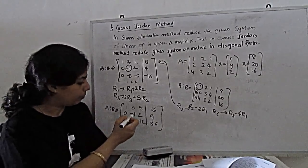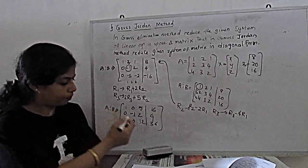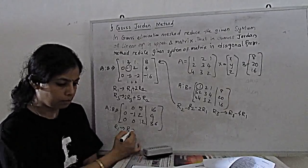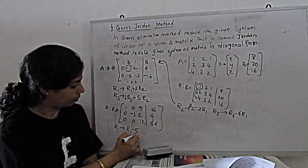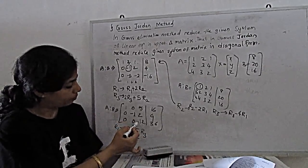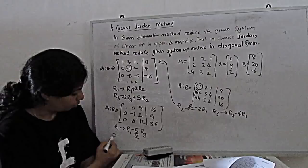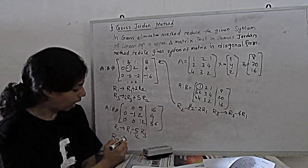Again, next step. So in R1, we can operate minus 5 by 12 R3. So when 5 by 12 of R3, 12, 12 cancel. And for R2 is R2.